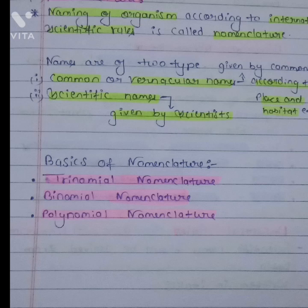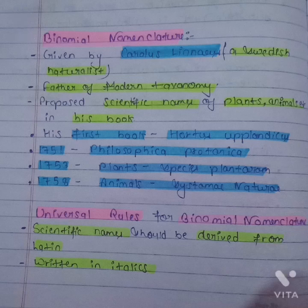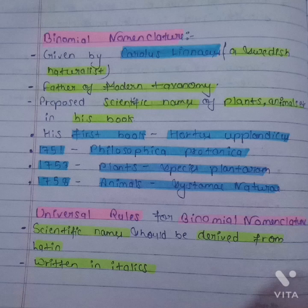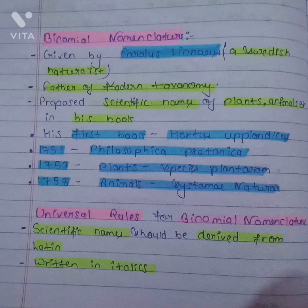There are three types of nomenclature: trinomial nomenclature, binomial nomenclature, and polynomial nomenclature. Binomial nomenclature was given by Carlos Linnaeus, a Swedish naturalist and father of modern taxonomy, who proposed scientific names of plants and animals. His first book was Hortus Uplandicus. Next was Philosophia Botanica, published in 1751. For plants, Species Plantarum was published in 1753. For animals, Systema Naturae was published in 1758.